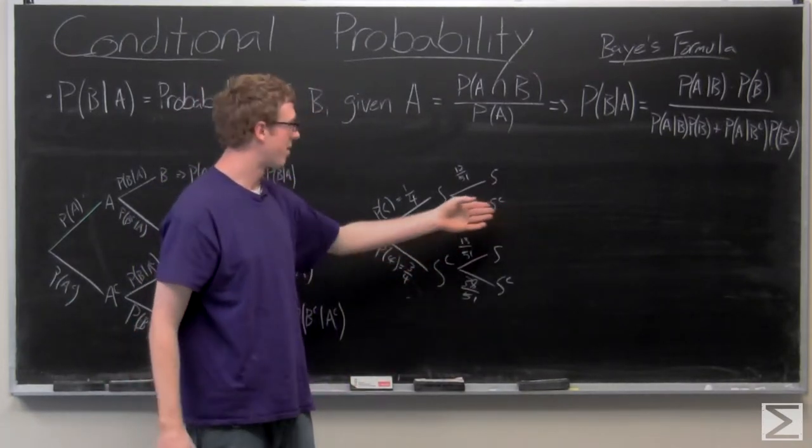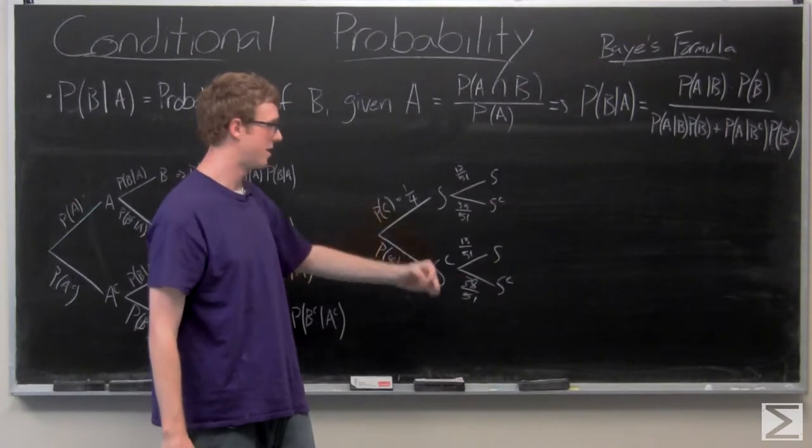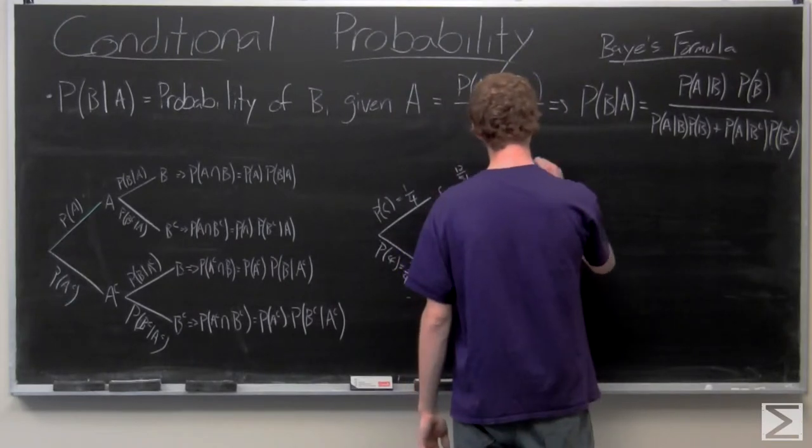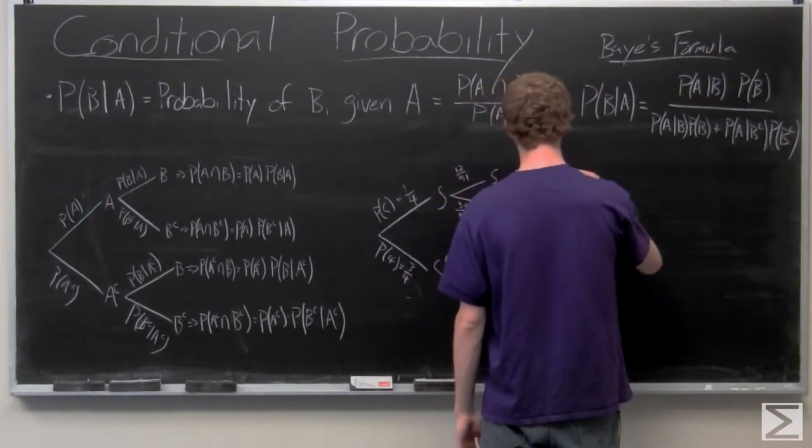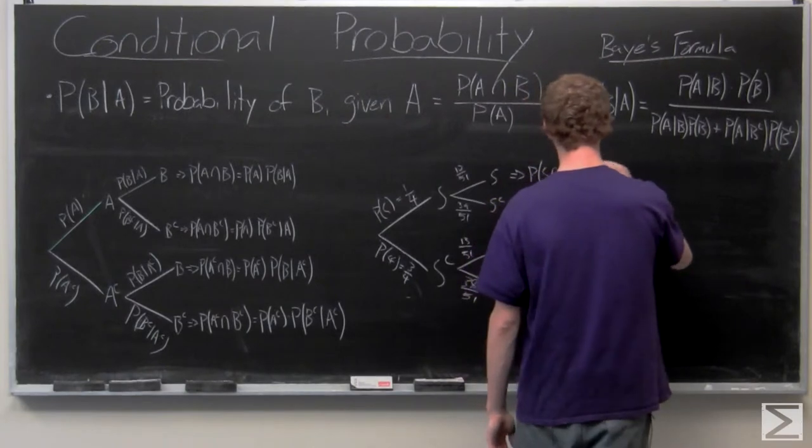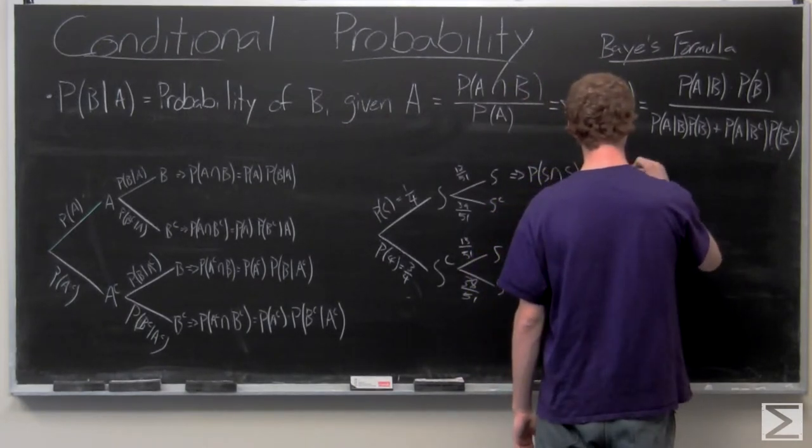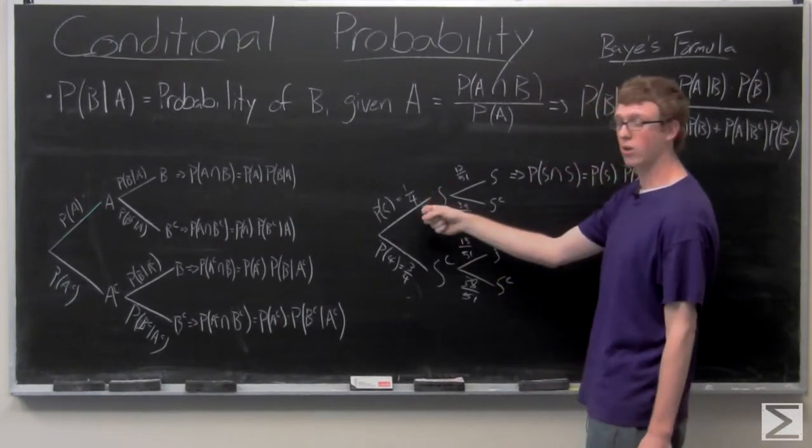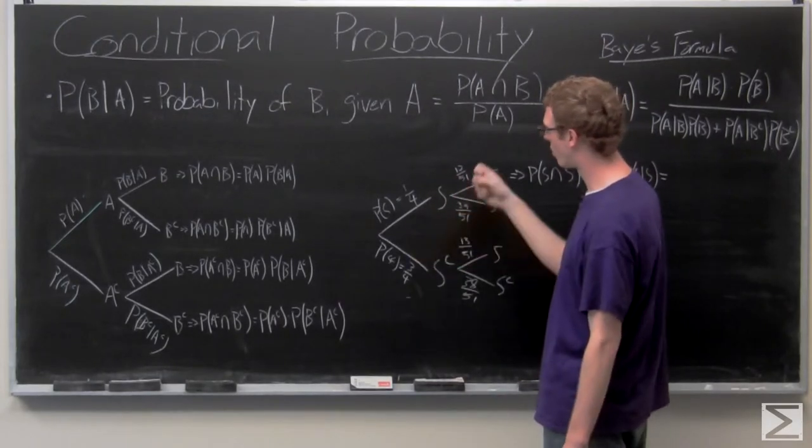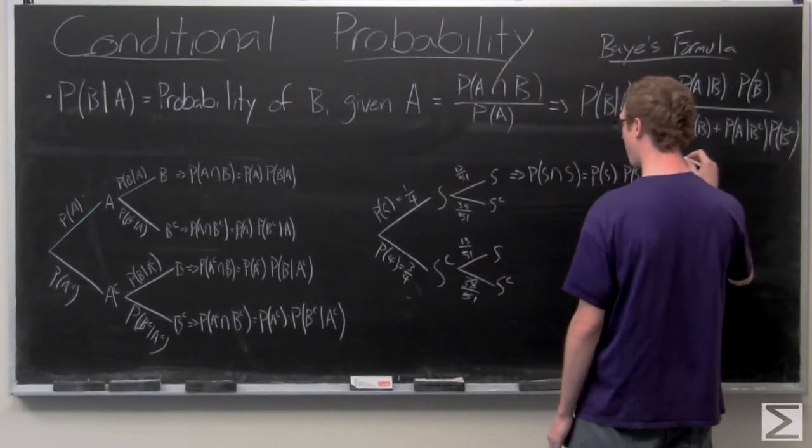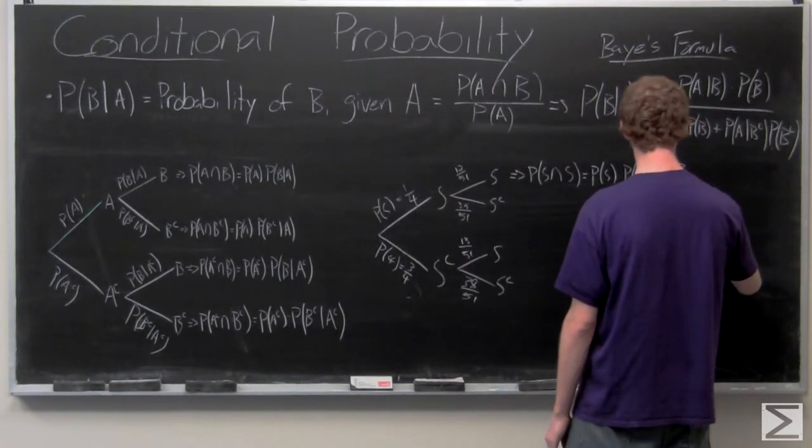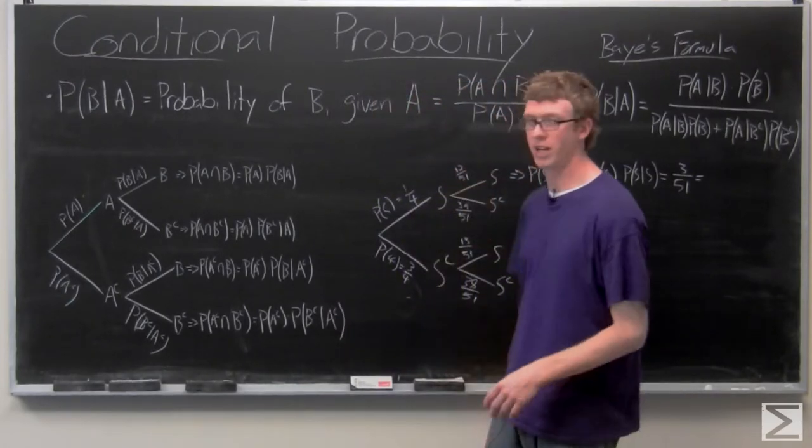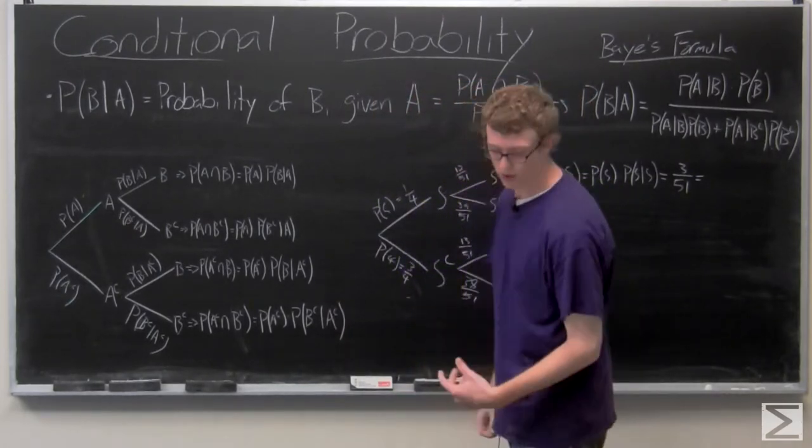So now we multiply through and find out the probability of getting a spade and a spade, probability of getting a spade and not a spade, et cetera. So we do a quarter times 12 out of 51. We can cancel the four and do three out of 51. Now in the end, we're going to have a bunch of numbers with the denominator as 204. So we're just going to expand that and we have 12 out of 204.